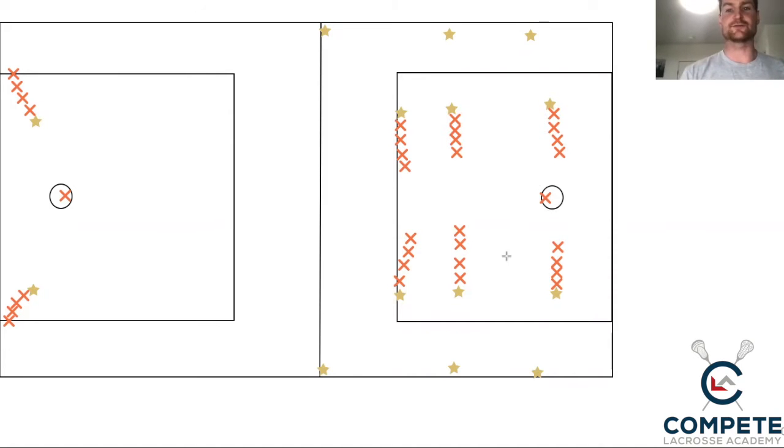So we've got three, if we just look at one side of the field, we've got three lines. We can have defenders, midfielders, short stick middies, long stick middies, close defense. They can be in all of these lines.